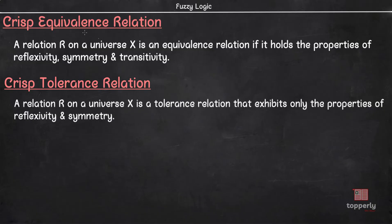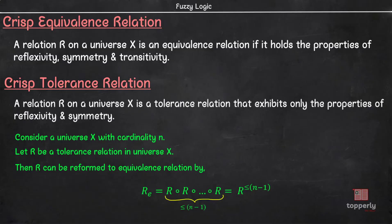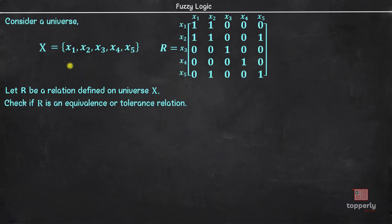You will clearly understand the difference between equivalence and tolerance relation once you see the example. There is one more interesting property: suppose a universe X has N elements in it and R is a tolerance relation in X. Then R can be reformed into an equivalence relation by performing the composition on itself for at most N-1 times. Consider a universe X with five elements X1, X2, X3, X4, and X5, and a relation R defined on universe X.